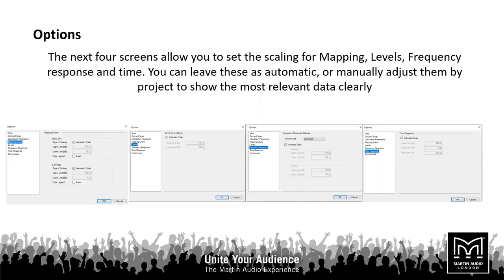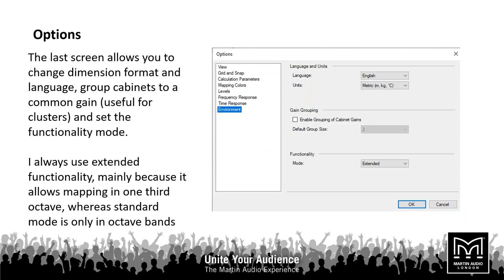The next four screens allow you to set up the scaling for mapping of levels, frequency, arrival times, and so on. You can leave these in automatic mode or set them to window the data to the useful information within your project. The environment screen allows you to set your language and whether your preferred units are metric or imperial. Gain grouping is useful especially when building clusters, as it allows you to turn the level of an entire cluster up and down whilst keeping relative levels between individual loudspeakers. Functionality mode — I keep it in extended mode so I have one-third octave mapping; the standard mode only allows a maximum resolution of octave-by-octave.